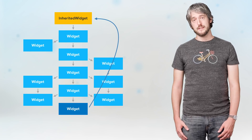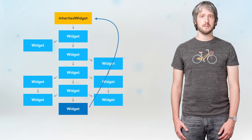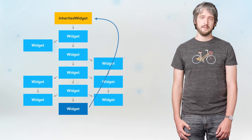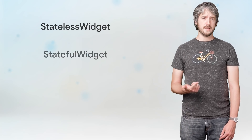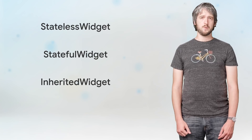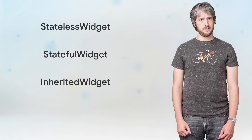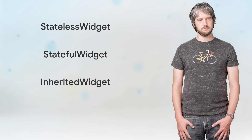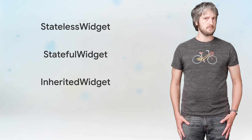To summarize, InheritedWidget is very neat — it lets you access state from way above in the tree. So in the past three episodes, we've covered three really useful widgets: Stateless, Stateful, and Inherited. Next time, we're going to talk about something very different, but equally important: Keys. Also, be sure to head to Flutter.io to see all of our widgets.